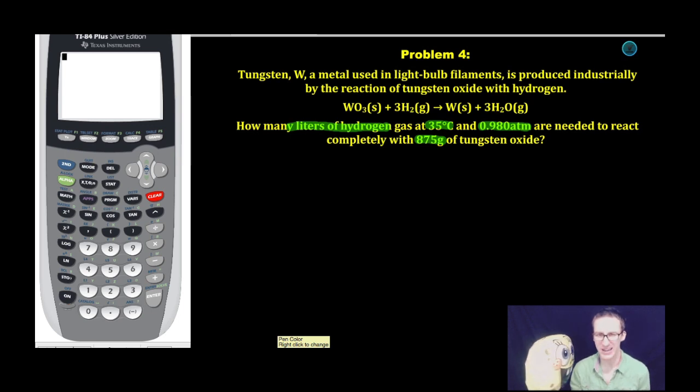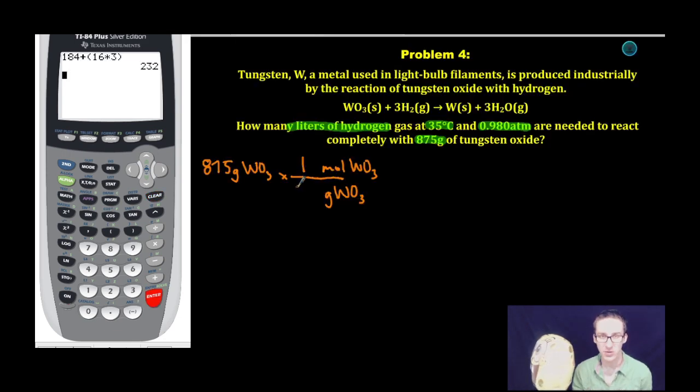You have to combine not only your understanding of stoichiometry with the ideal gas law. So the first thing I'm going to do is start with my 875 grams of tungsten oxide or WO3 and I'm going to convert that to moles of tungsten oxide. Tungsten, where are you? From the periodic table, the molar mass of tungsten oxide is 232 grams.